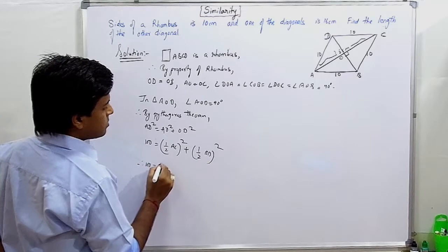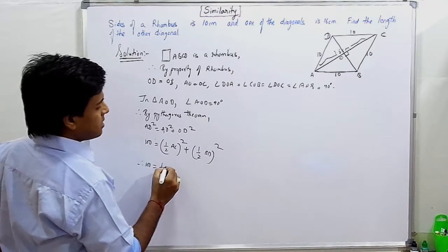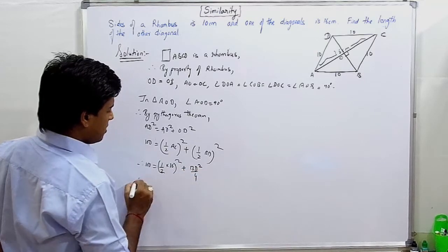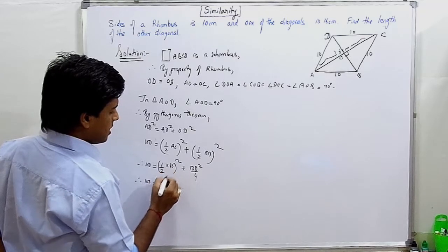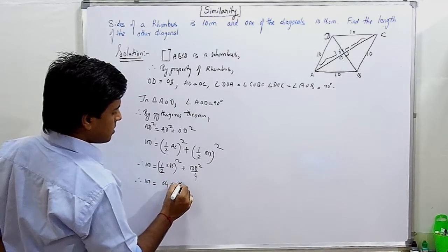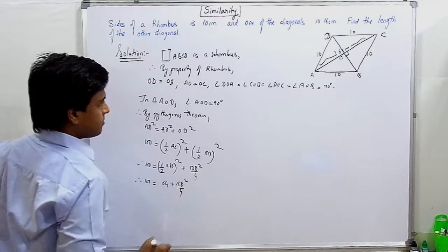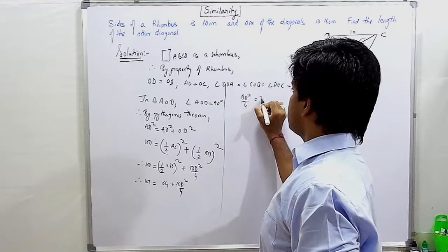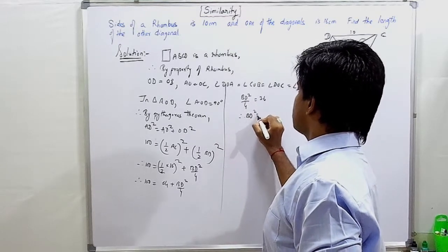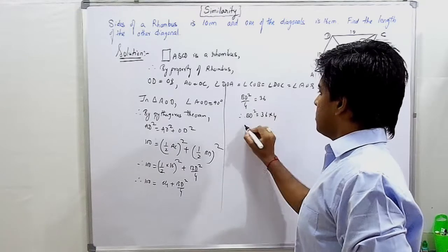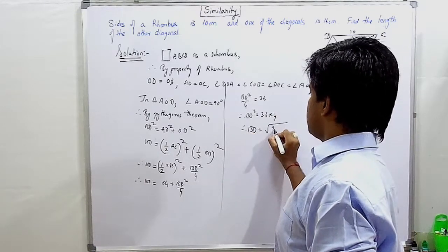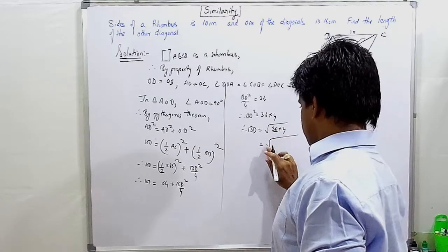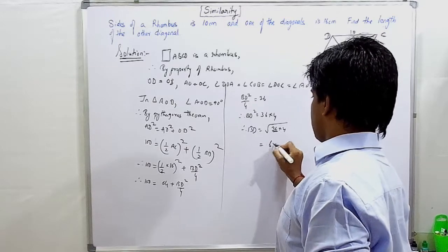Therefore 100 equals half of AC, which is 16, the whole squared, plus BD squared upon 4. Therefore BD squared upon 4 equals 36. Therefore BD squared equals 36 into 4. Therefore BD equals square root of 36 into 4. BD square root directly equals 6 times 2, which is 12.